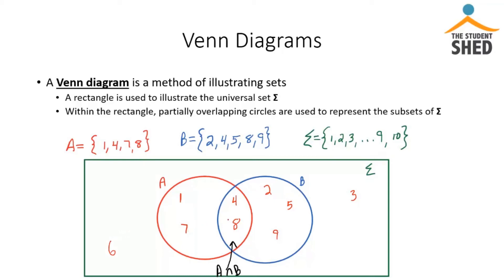7 is represented, 8 and 9 are represented, but 10. Again, 10 is an element of the universal set but not part of A or B. So since it's not an element of A or B we're going to put that somewhere outside the circles representing set A and set B.